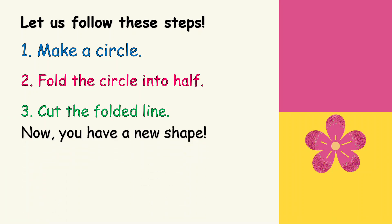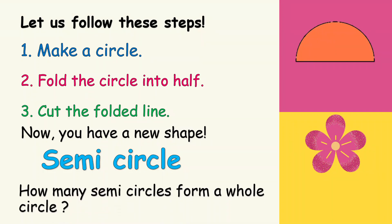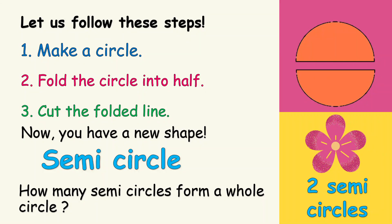Now you have a new shape. Do you know the name of that shape? When you cut the circle into two in the middle, you get this shape. We call it a semicircle — it is half of the circle. How many semicircles form a whole circle? There are two semicircles. If we put together these two semicircles, we form a whole circle.